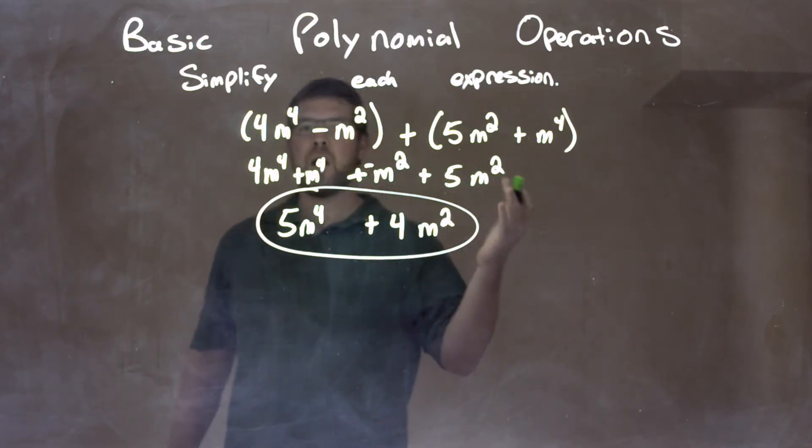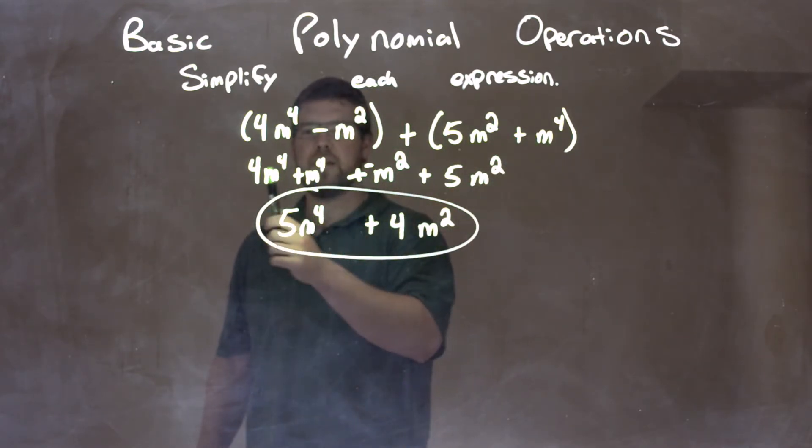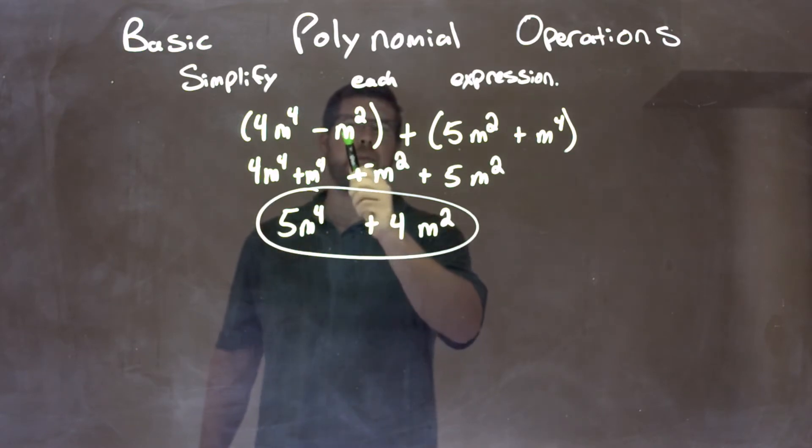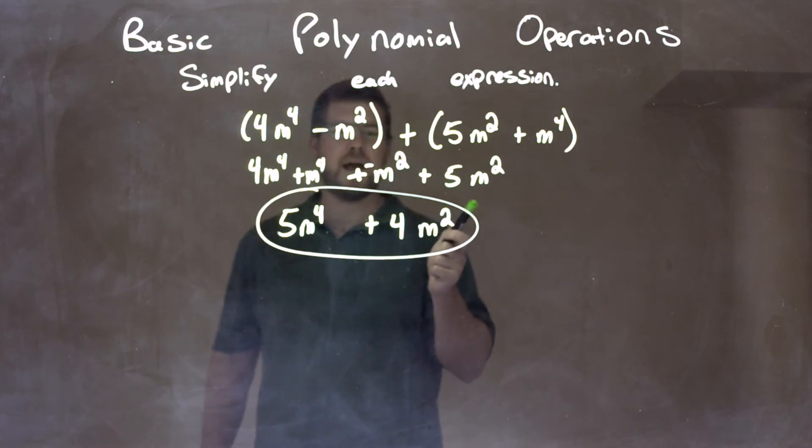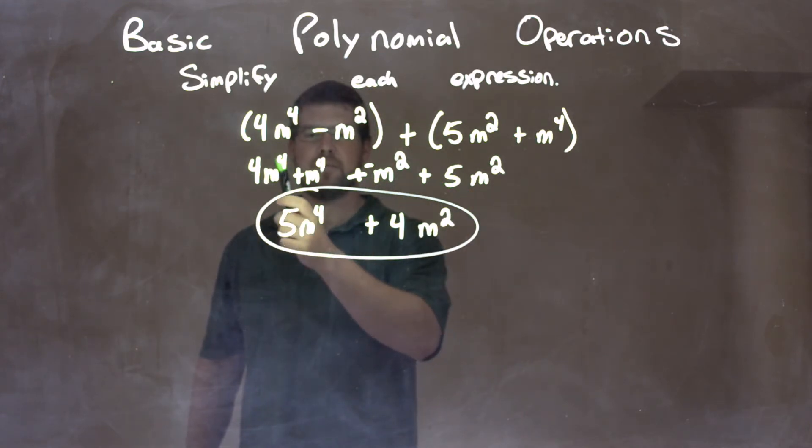Then I brought my like terms together. I brought my m to the 4th over here with my 4m to the 4th, and then I brought down the minus m squared and brought down 5m squared. Then I combined my like terms. 4m to the 4th plus m to the 4th is 5m to the 4th.